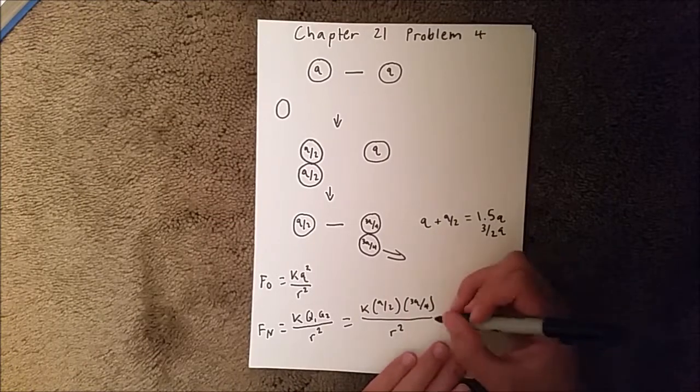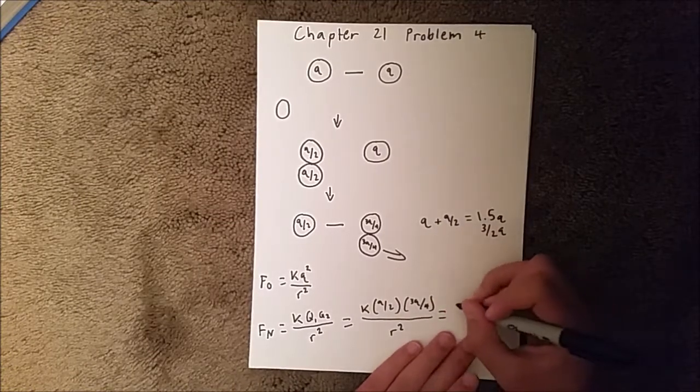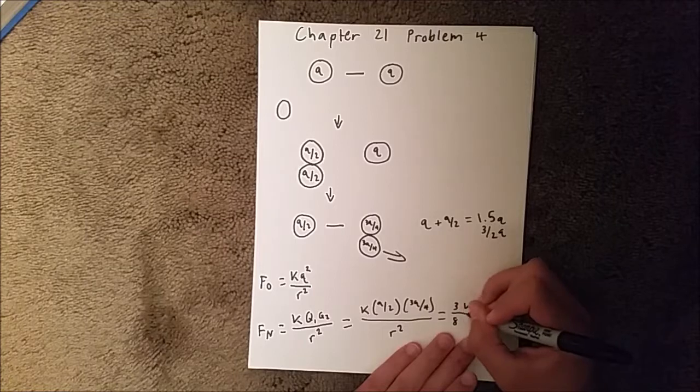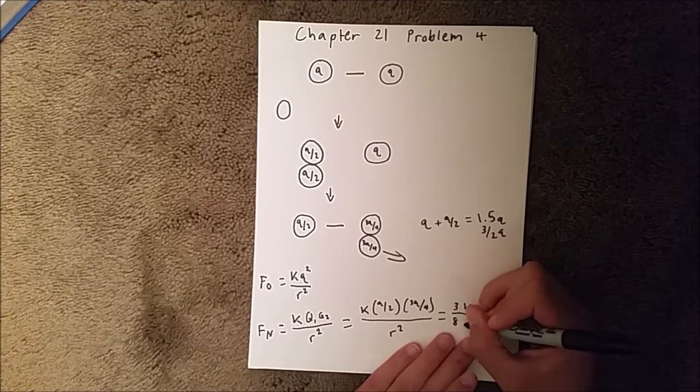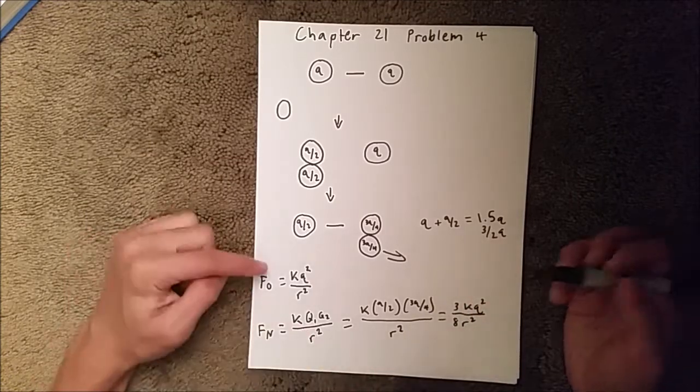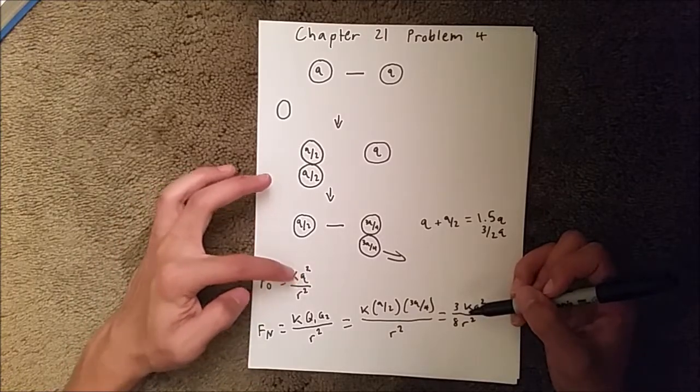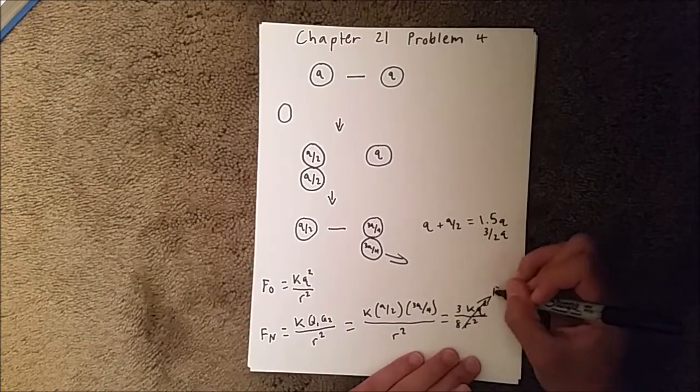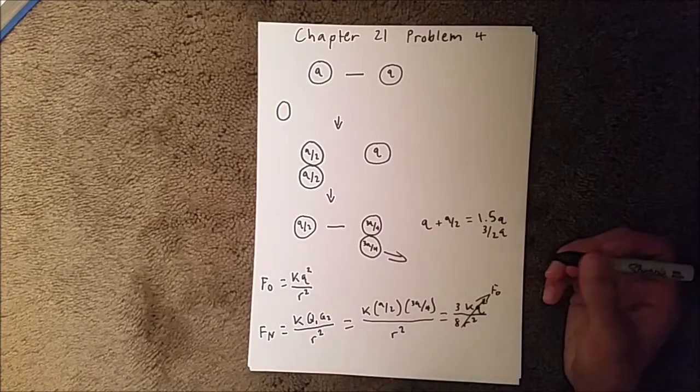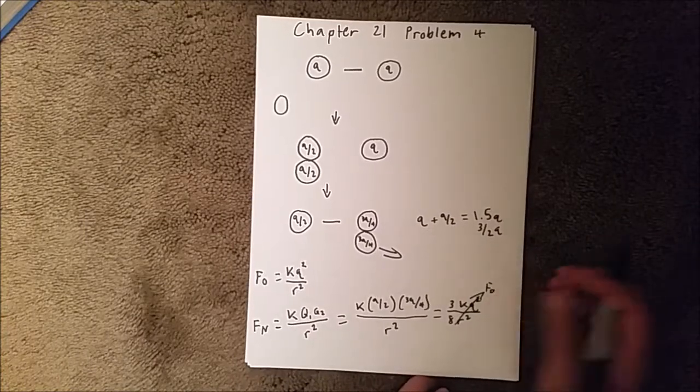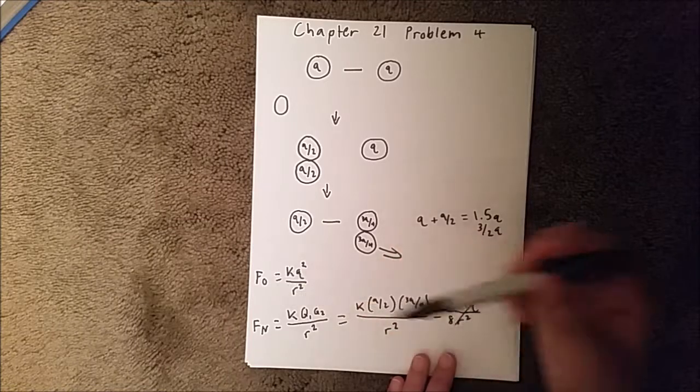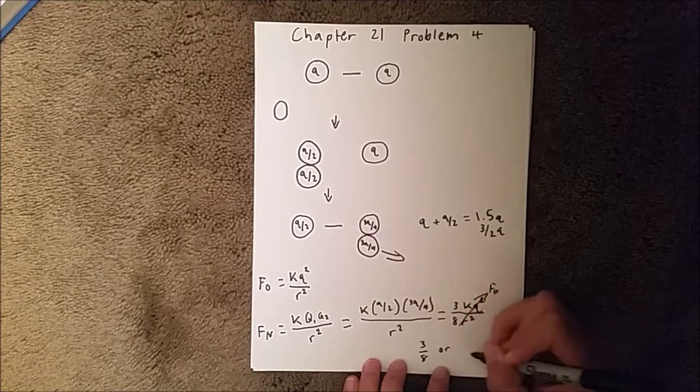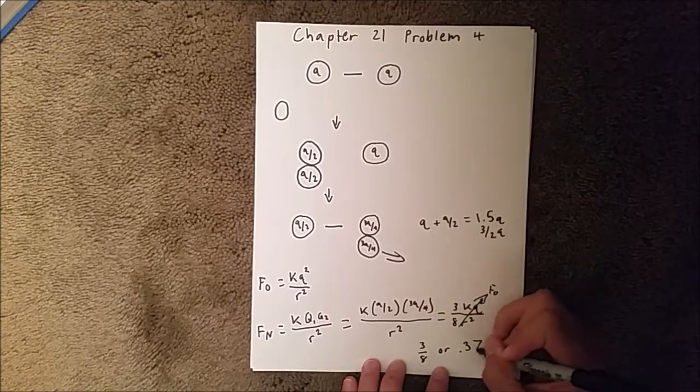When you simplify that, you should get 3 over 8 times K Q squared over R squared. If you look here, K Q squared over R squared is equal to force original. So we can set this equal to force original, which means that the ratio between our original force and our new force is 3/8 or 0.375.